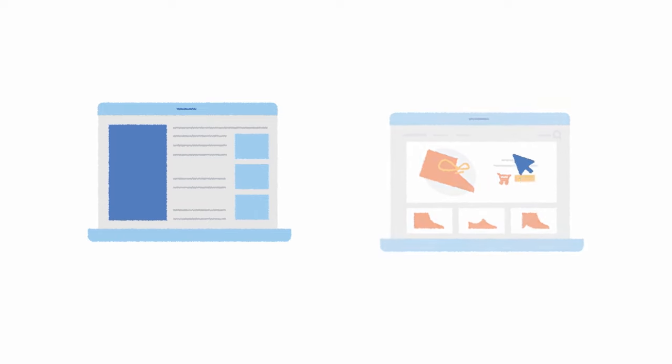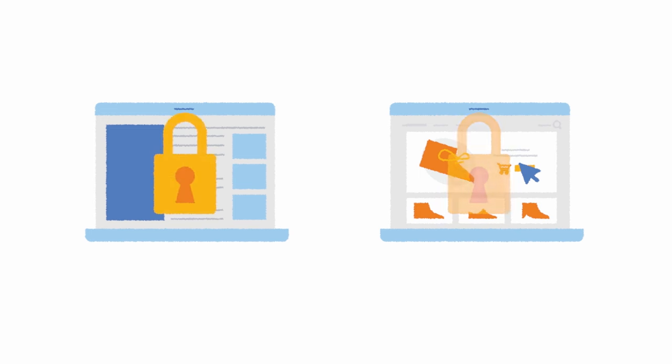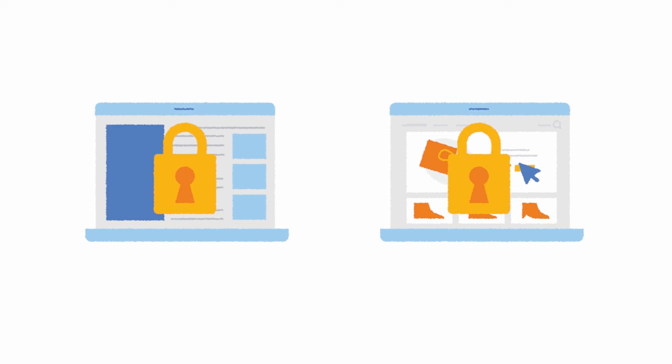Historically, third-party cookies and other mechanisms have been used to track your activity as you interact with sites across the web. Many people are concerned about the privacy implications of these cross-site identifiers. Chrome is planning to deprecate third-party cookies and introduce features to reduce cross-site tracking. Attribution Reporting helps measure conversions, but without cross-site identifiers.